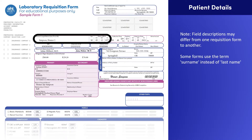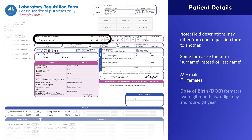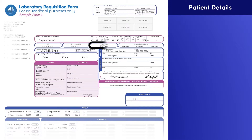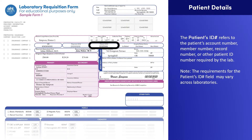Sex refers to the patient's gender, and most forms require M for males and F for females. In the date of birth field, forms usually require dates to be entered in the two-digit month, two-digit day, and four-digit year format. The patient's ID number refers to the patient's account number, member number, record number, or other patient ID number required by the lab.